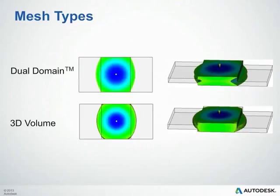Here you can see an example of a dual domain mesh versus a 3D mesh. A 3D mesh is typically more optimal for thick-walled parts or capturing complex flow fronts. In this example, you can see the dual domain mesh is having a little bit of an issue capturing that flow front on the top part, whereas the 3D mesh is not.